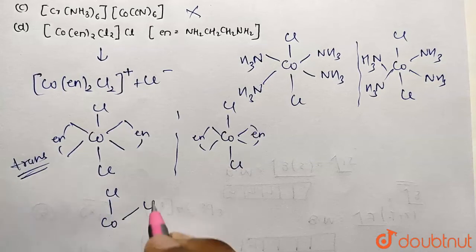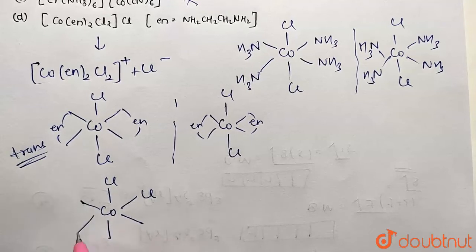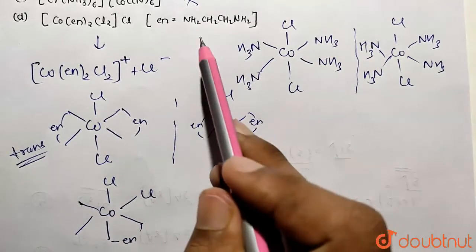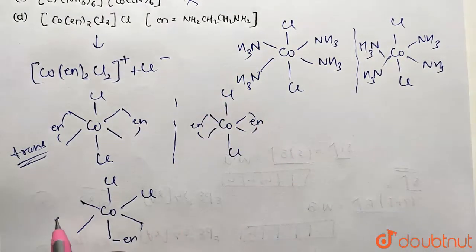So if I draw the rest set of structure, so this will be occupied by en, where en is representing our NH2-CH2-CH2-NH2, that is ethylene diamine. Over here this is being occupied by en.